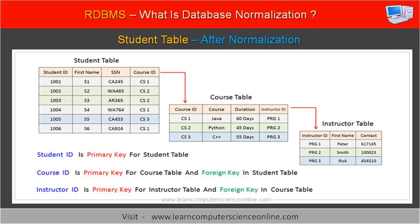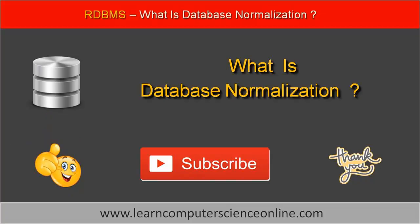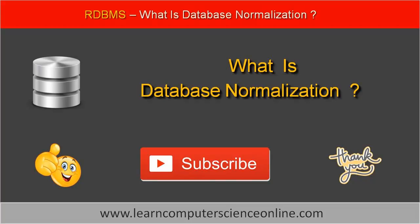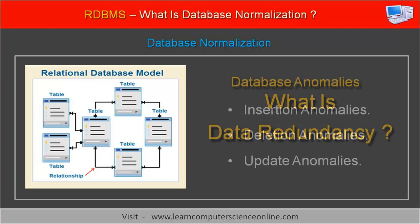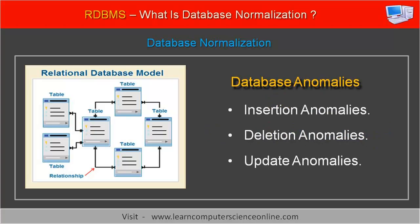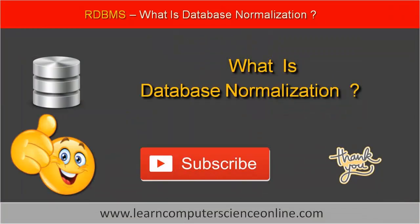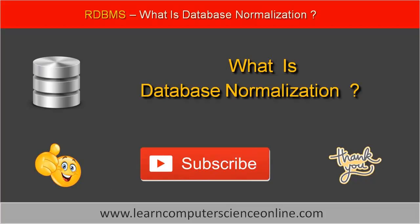Please read the detailed article on our website LearnComputerScienceOnline.com for more details. That brings us to the end of this tutorial. In this tutorial, we have discussed what is database normalization, the problem of data redundancy in a table with an example, what are database anomalies, and how database normalization can fix these problems. If you liked this video, please give us a thumbs up and consider subscribing to this channel. Thanks for watching, and I will see you soon with another computer science video.